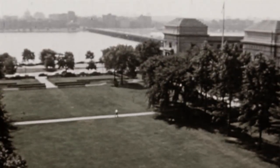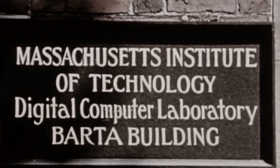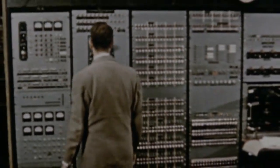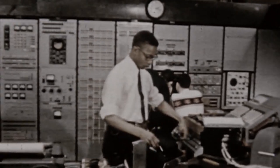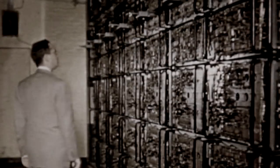The Whirlwind computer came online at MIT in 1949. It occupied 3,300 square feet within a two-story building. It contained 12,500 tubes, 23,803 crystal rectifiers, and 1,800 relays.